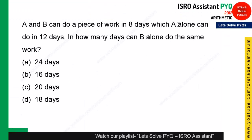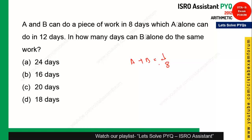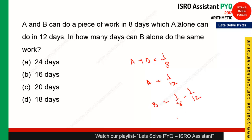The next question is also from time and work. A and B together can do work in 8 days (efficiency = 1/8); A alone can do it in 12 days (efficiency = 1/12). B alone = 1/8 − 1/12 = 3/24 − 2/24 = 1/24. So B alone takes 24 days. Option A is the correct answer.